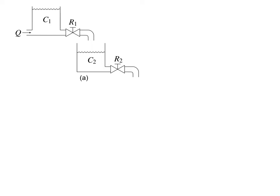Here we have a decoupled hydraulic circuit. This example will serve to illustrate the difference between a signal bond and a power bond. We can think of this as two subsystems, this being one and this the other.